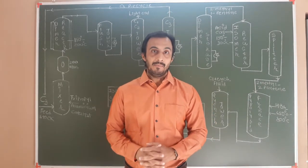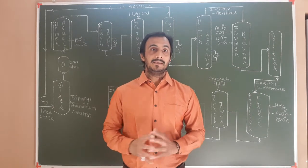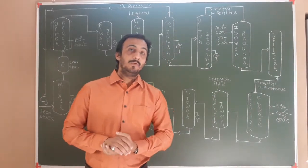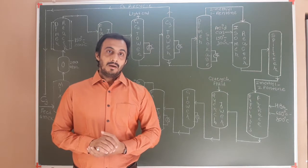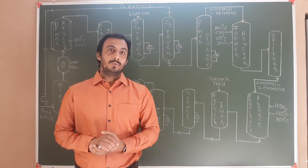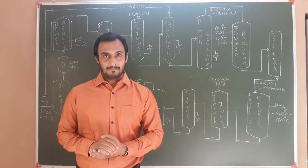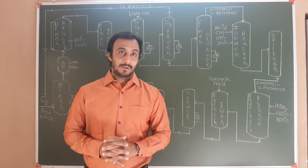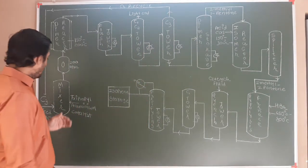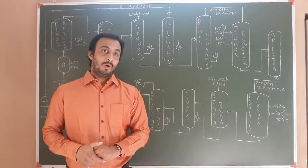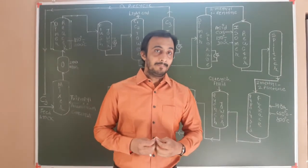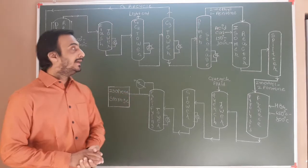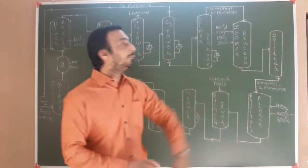What is a dimer reactor? Basically it is used for the dimerization process, from which we produce a dimer. Dimerization is a process in which a compound is formed from two same kind of molecules. Here, two propylene molecules are attached with each other in the presence of tri-propyl aluminum catalyst at 150 to 200 degrees Celsius.